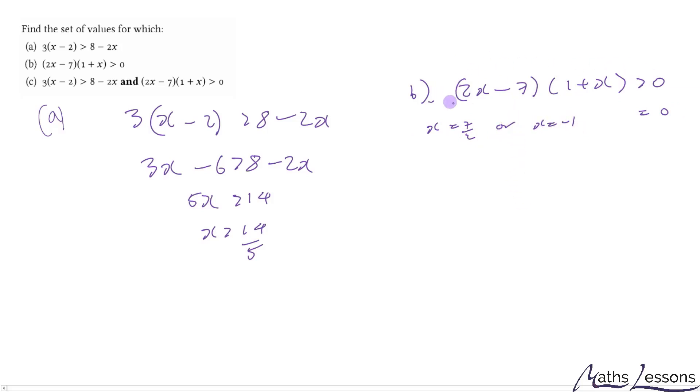Now, if you can imagine this being a function f of x, then we can draw a sketch of that function. And it will cross at minus 1 and it will cross at 7 over 2. So let's draw a sketch of that. Minus 1, 7 over 2.